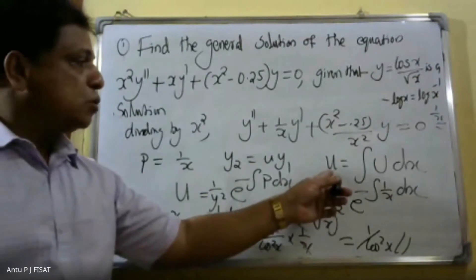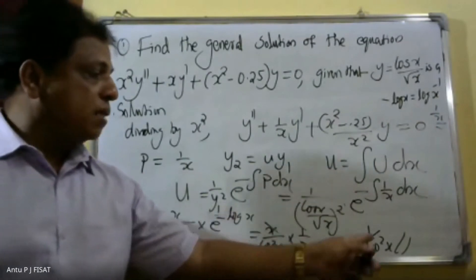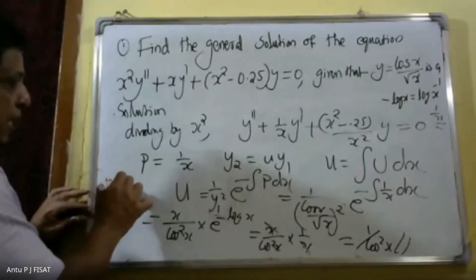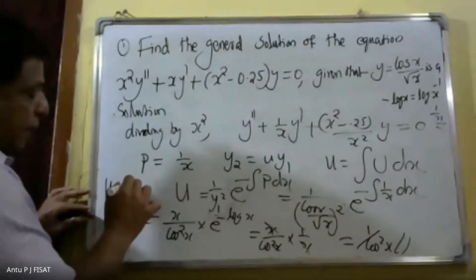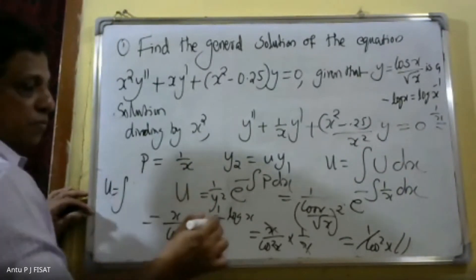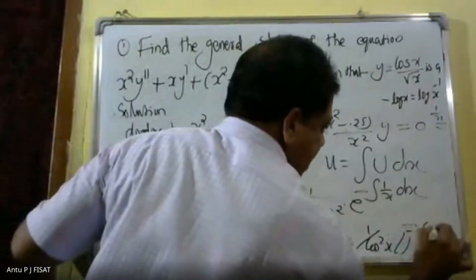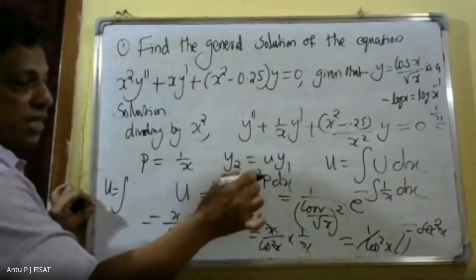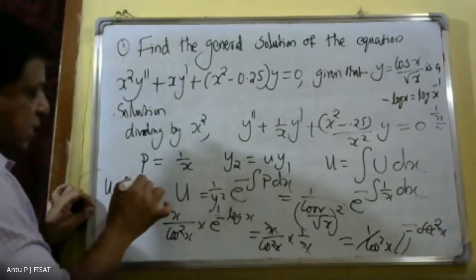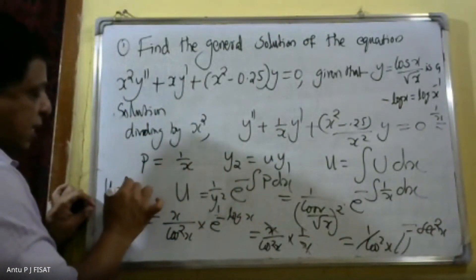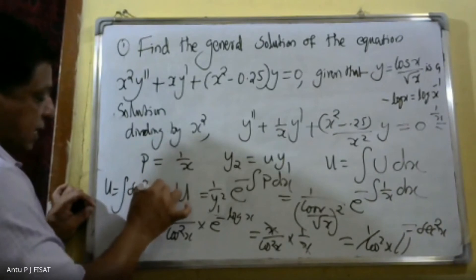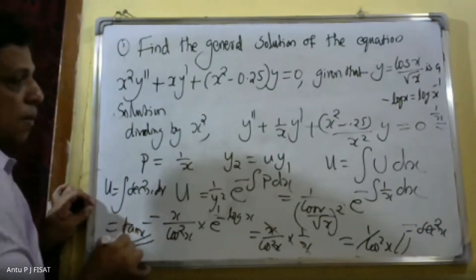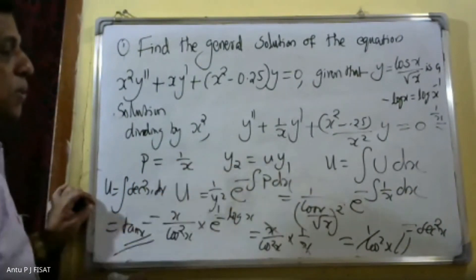Integrating 1/cos²(x), which is sec²(x), gives u = tan(x).